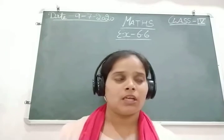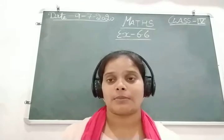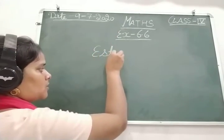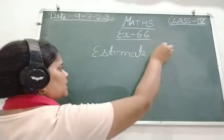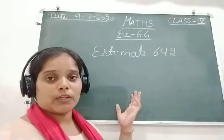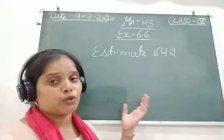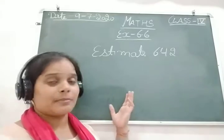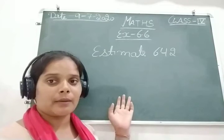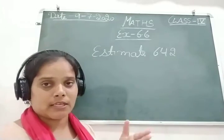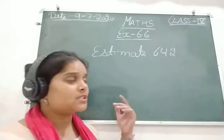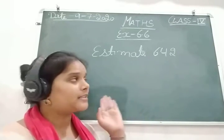So let's begin with the first one. Suppose there is a sum and you have to estimate 642. So this means you have to estimate to the nearest hundred, or you have to estimate to the nearest thousand. Is there anything mentioned here? No. So if we have to estimate to the nearest hundred, we will do that. If it is given to estimate to the nearest thousand, we will do that also. But if there is nothing given, just estimate to the highest place value.